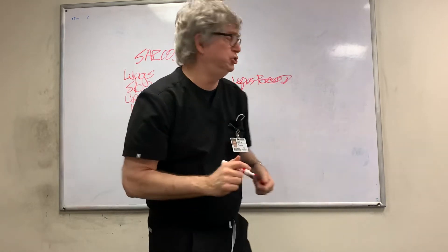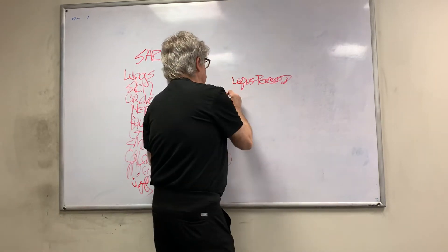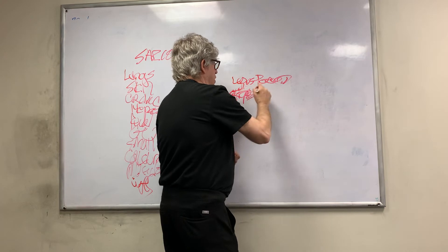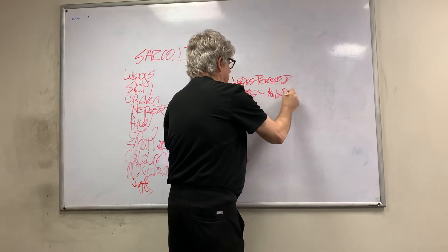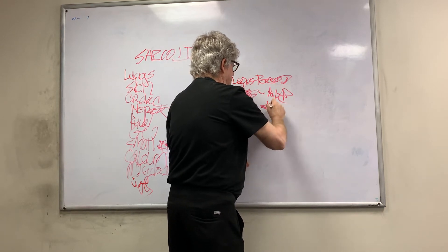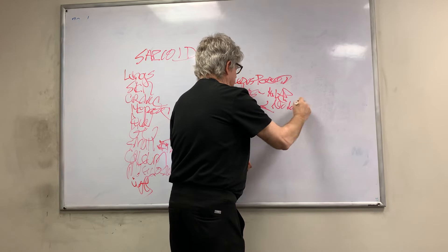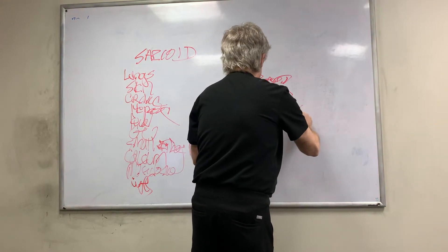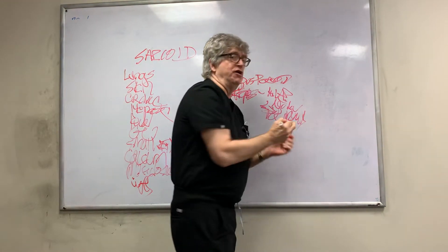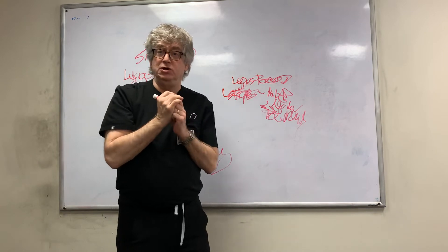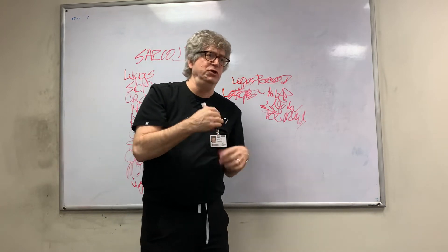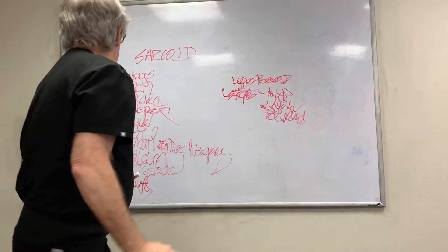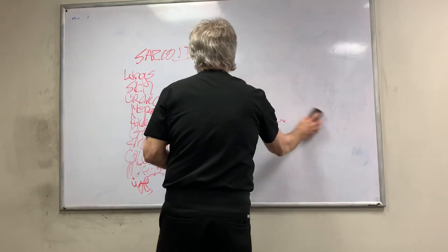There's a certain syndrome you can see with erythema nodosum called Lofgren's syndrome, where you have hilar adenopathy, erythema nodosum, and periarthritis, often in the ankles. Lofgren's syndrome is self-limited — it goes away on its own.